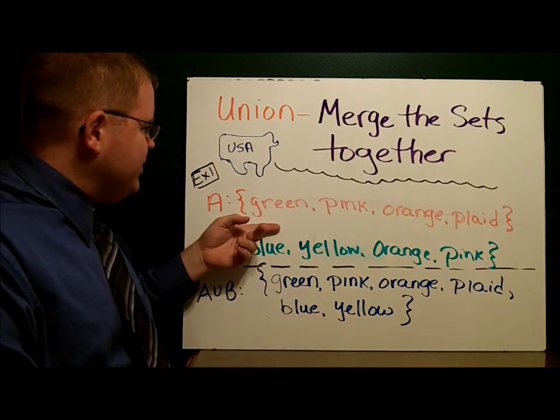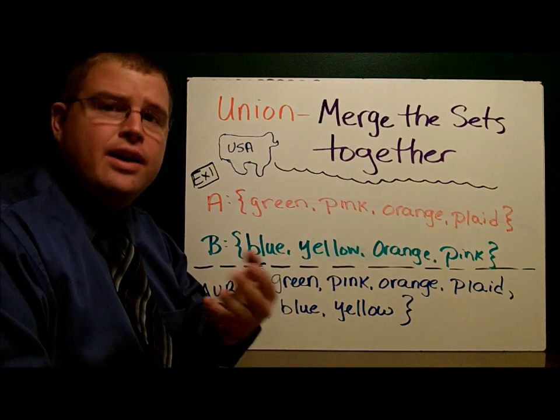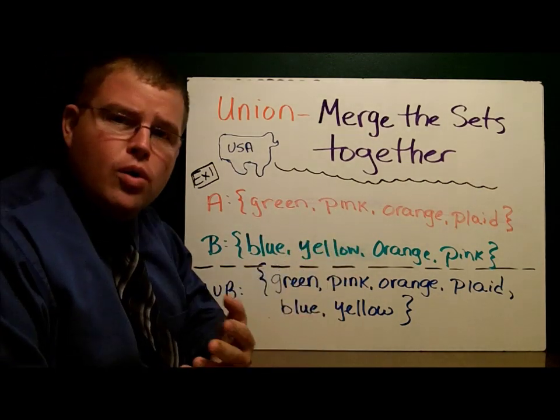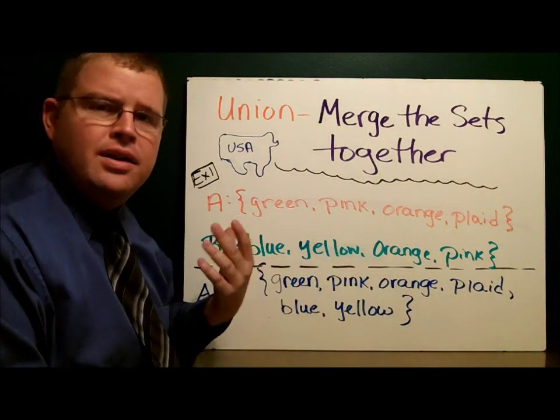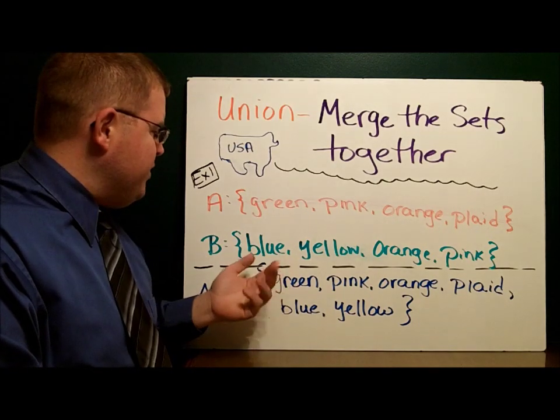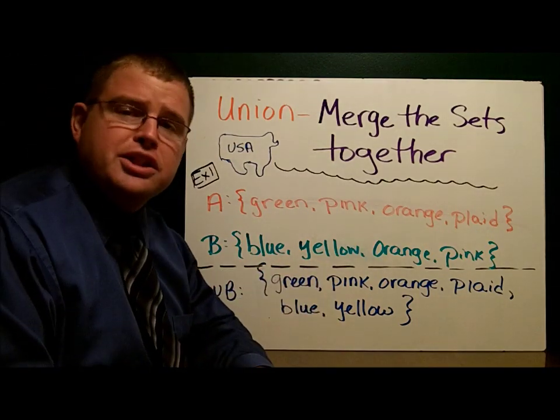Here we have a first example. We have set A that has four colors in it: green, pink, orange, and plaid. Set B also has a few members: blue, yellow, orange, and pink.